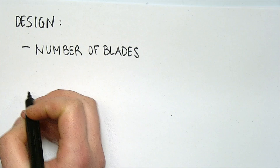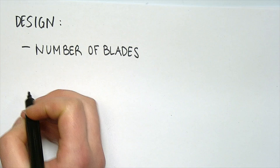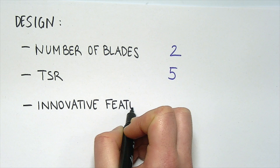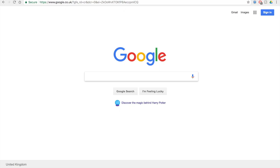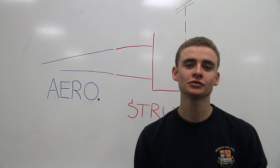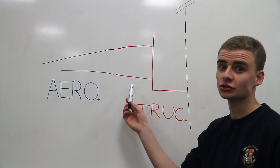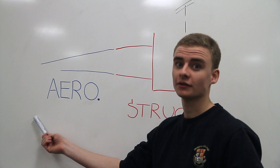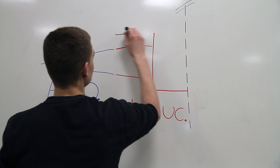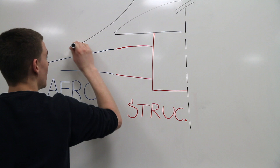Our design had two blades and a TSR of five. It had a lower twist enabling a larger turbine radius. The aerospace engineering industry is a constant playoff between structural and aerodynamic considerations. Typically in a wind turbine, near the centre, structural considerations hold forward, whereas as we move out, aerodynamic considerations hold forward. We introduced a mushroom shape that deflected air from the structural region onto the lift-producing parts of the blade, thus increasing our efficiency.